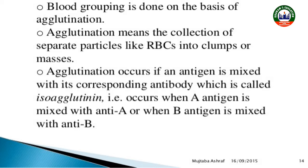We detect the blood group on the basis of antigen-antibody reaction. Clamping occurs when an antigen is mixed with the concerned antibody. Through this technique known as blood grouping, we can determine which blood group is present in a person.